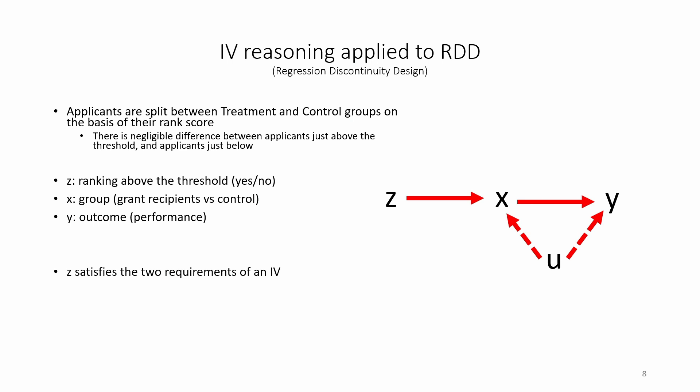In the first stage, Z causes X. This makes sense because the position relative to the threshold causes whether an applicant receives the grant.